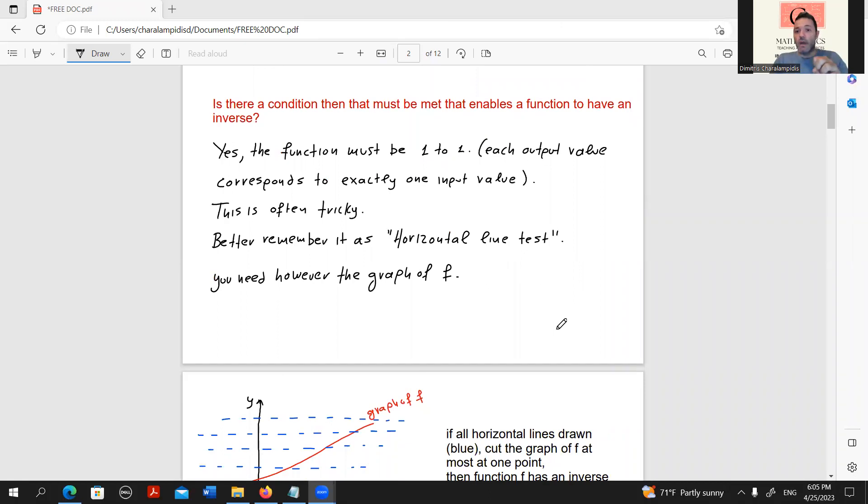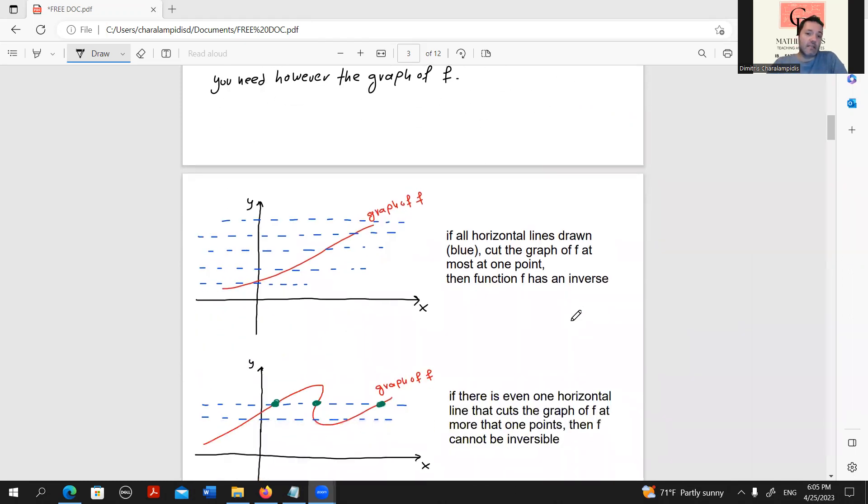Yes. The condition that should be met is that the original function f must be a one-to-one function. This means that each output value should correspond to exactly one input value. We could remember the horizontal line test. But in order to be able to apply that, we definitely need to know the graph of f.